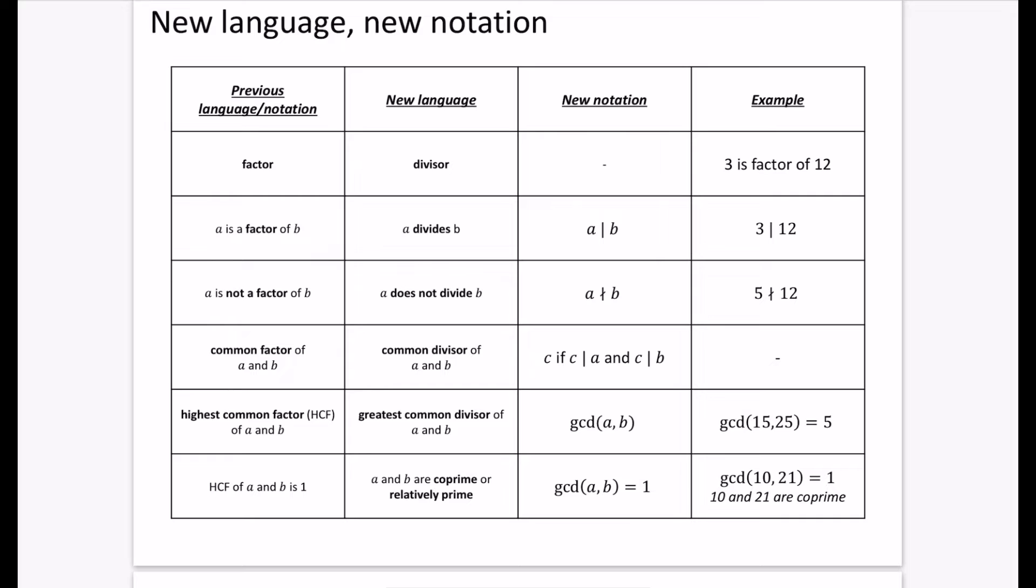You can also tell that this number has to be less than or equal to the second number, it wouldn't be possible for this one to be bigger than this one. So it's always getting a sense that a will be smaller than b, or potentially equal to b as well, because obviously, any number is a factor of itself.